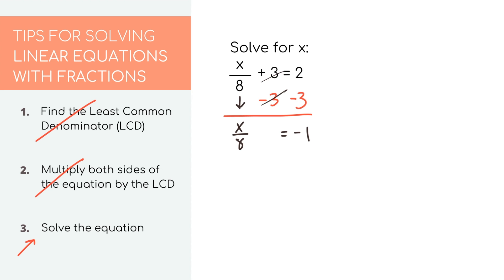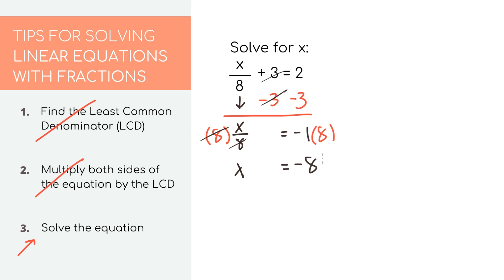In order to fully isolate X, we need to get rid of the eight. Since it's X divided by eight, we need to do the opposite and multiply by eight. Let's do it to both sides. On the left, the eights cancel, so we're just left with X. And on the right, we have negative one times eight, which equals negative eight. So our answer is X equals negative eight.